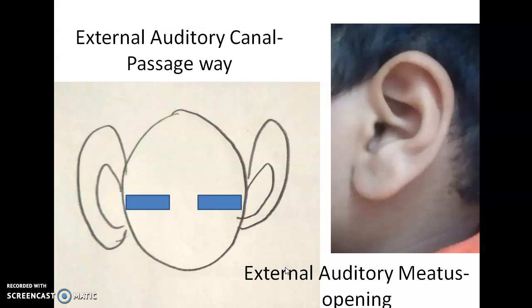This external auditory canal is a passageway for the sound to travel from the outside of the head to the inside towards the tympanic membrane. Meatus means an opening. You can see it is an opening in the head which leads to the interior towards the tympanic membrane.